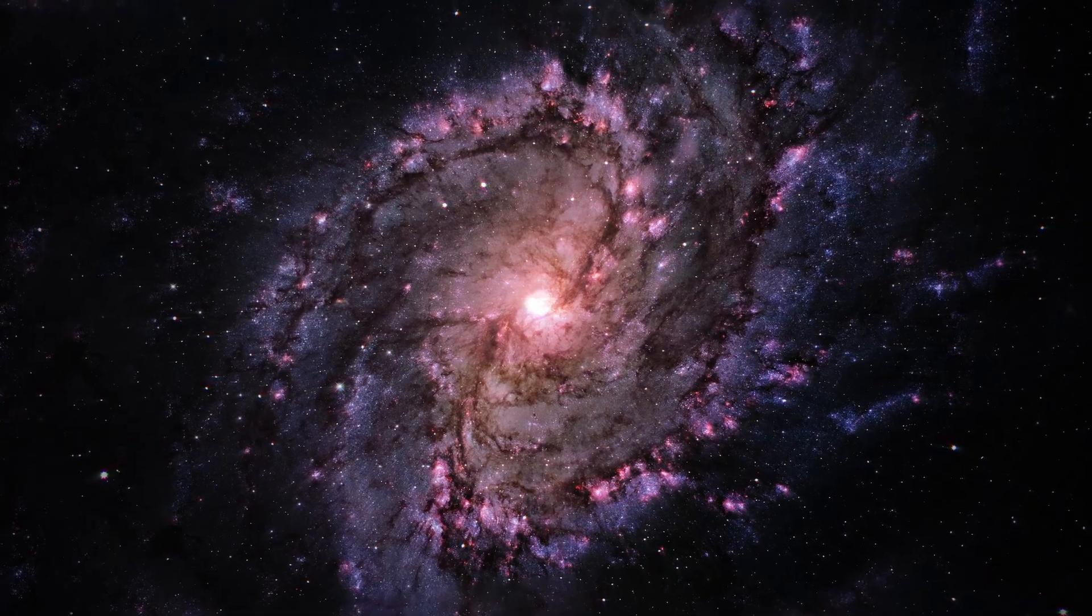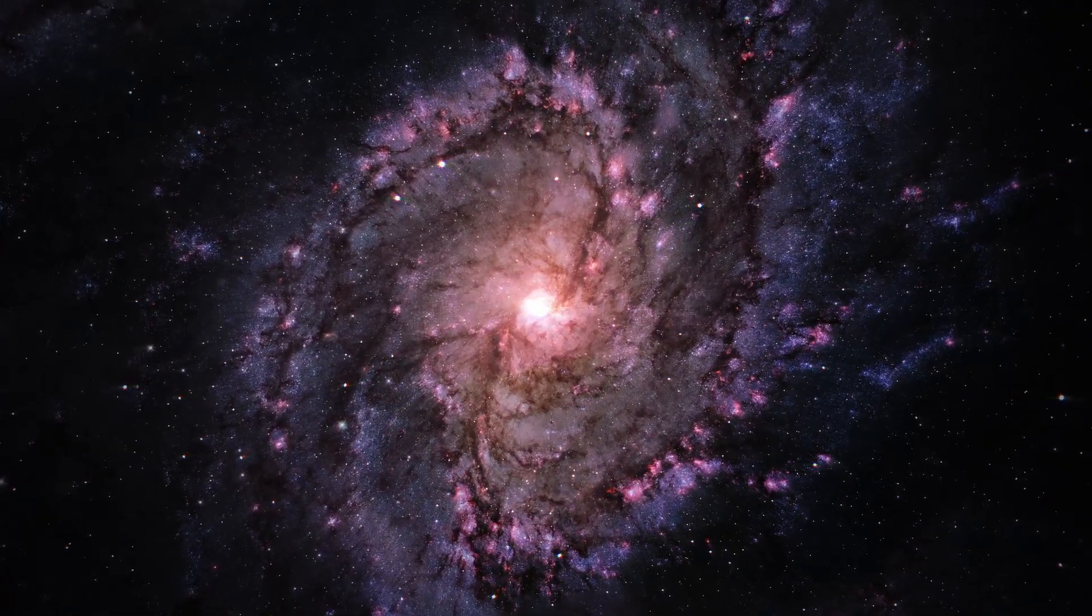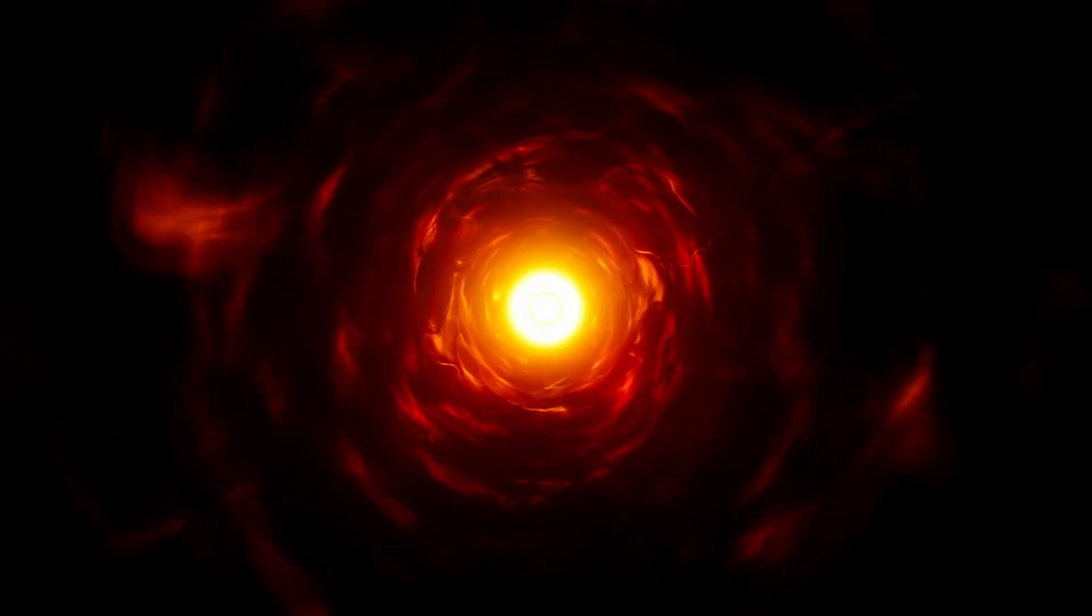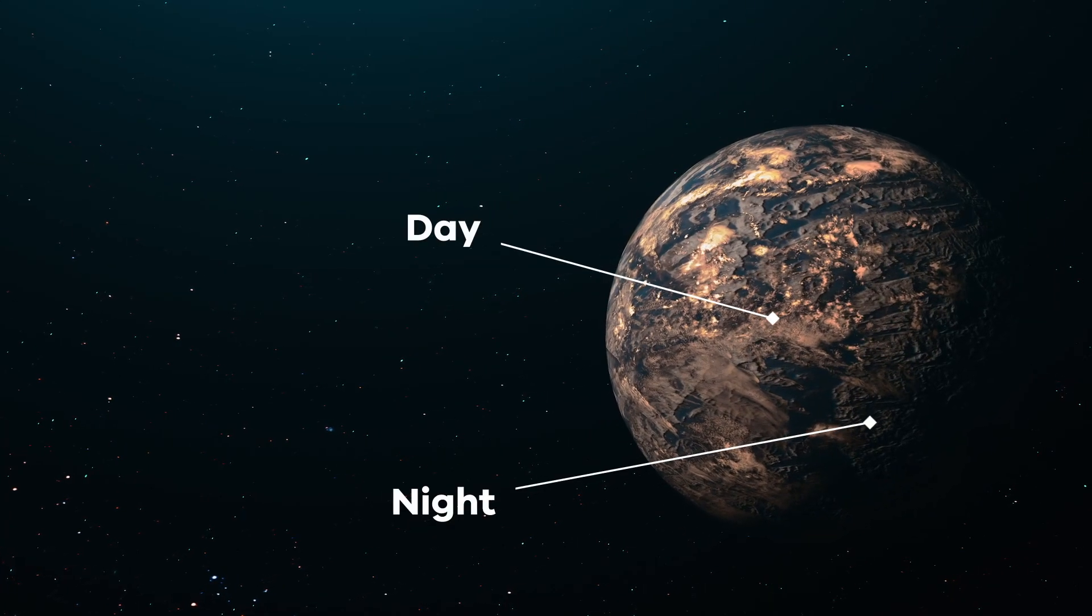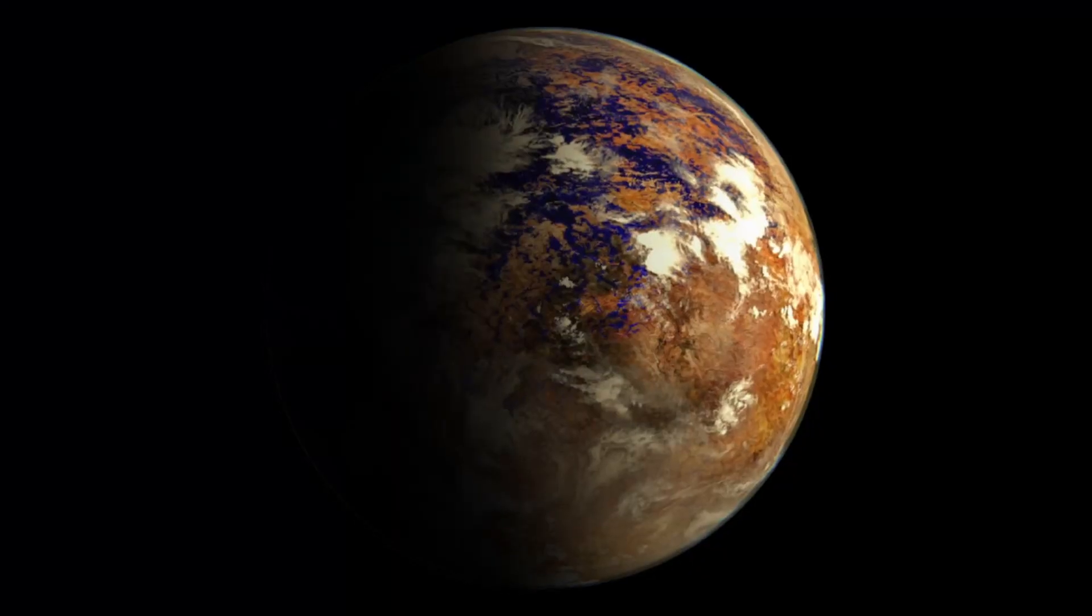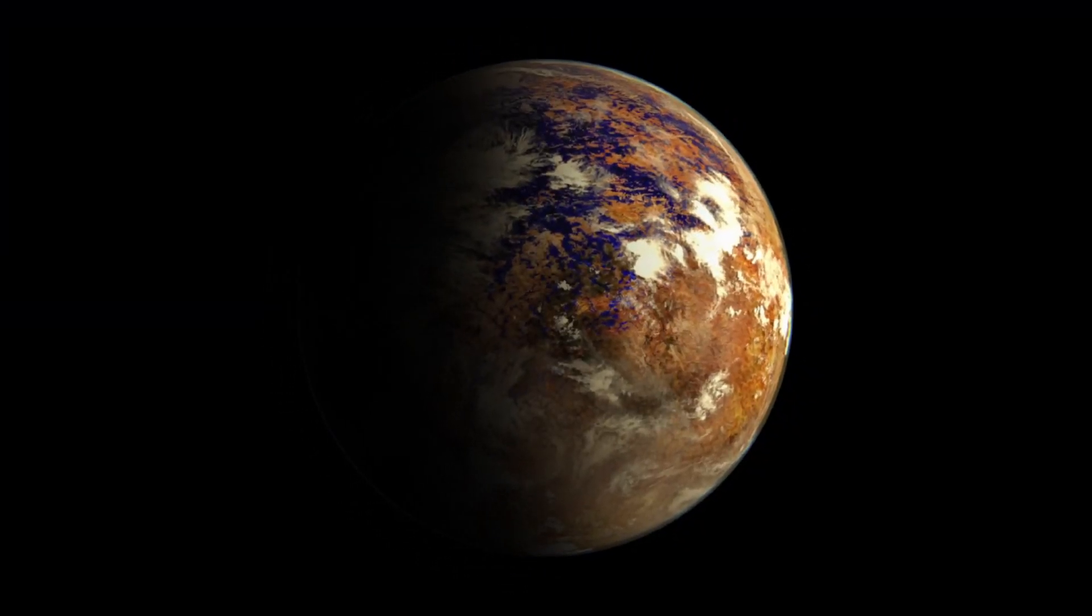However, Proxima b orbits a star that is much dimmer and less massive than our Sun. Researchers suspect that the planet is tidally locked, meaning one side constantly faces the star while the other remains in perpetual darkness. This creates a light side and a dark side.